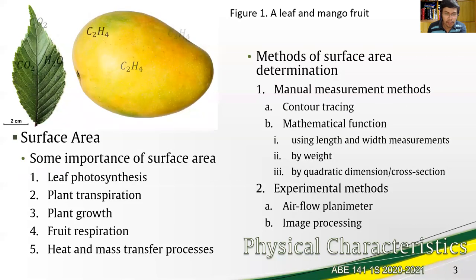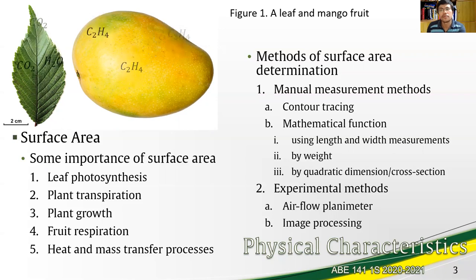For the methods of surface area determination, we have contour tracing, which is straightforward. We will discuss the others in detail, beginning with the mathematical method using other parameters to relate the surface area. We also have two methods under experimental: the airflow planimeter and image processing.